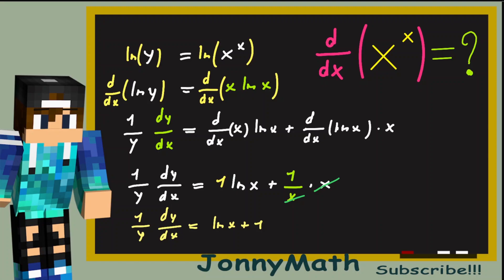Well, just multiply both members by y. So y times 1 over y times dy over dx and y times the natural log of x plus 1. So we have dy over dx equals y times the natural log of x plus 1.